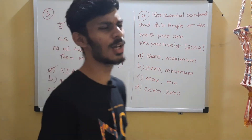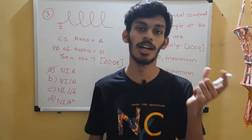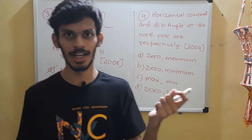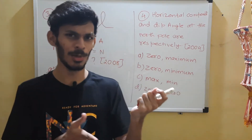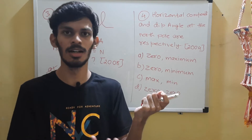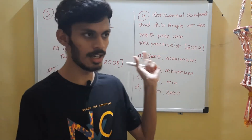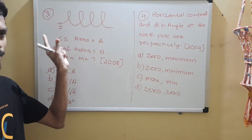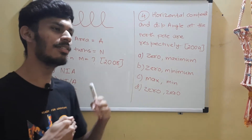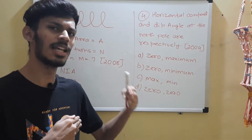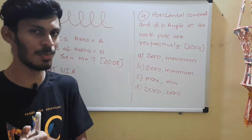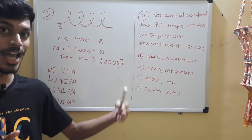For those who don't know: think about a current-carrying loop. The magnetic moment of a current-carrying loop is M = I × A — the current times the area vector. Here we have a coil of N turns, so the current effectively becomes N times I, making the magnetic moment NIA.